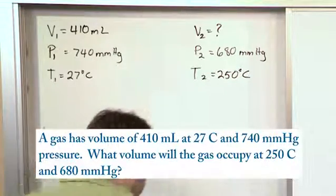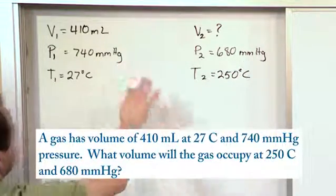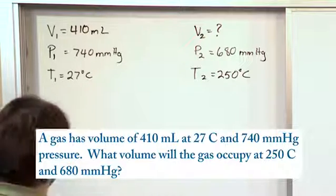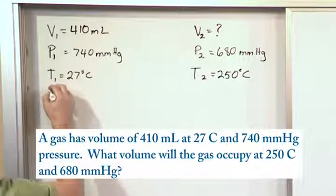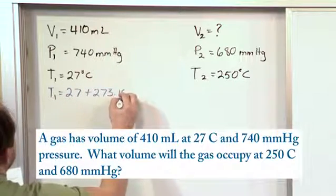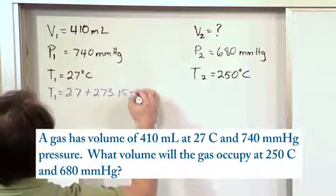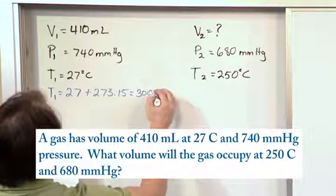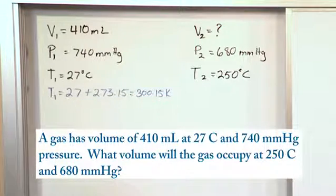Now you should know by now, when you're doing these equations, you really want to be working in Kelvin. So right away, these temperatures need to change. So T1, you just take your temperature in Celsius and you add 273.15. And when you do that, you get 300.15 Kelvin. This is the temperature that we're going to use.